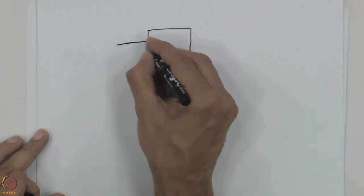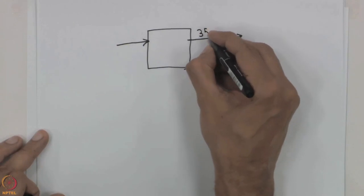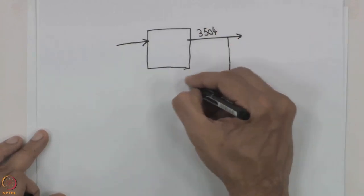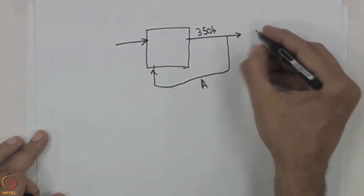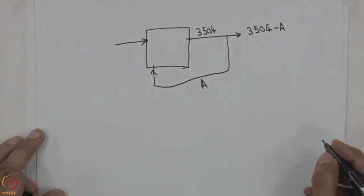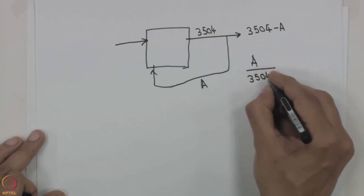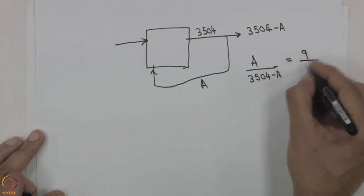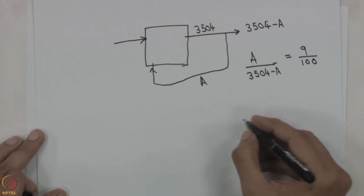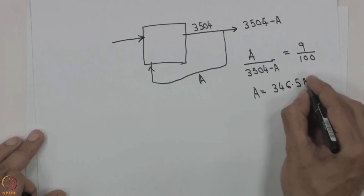This was the gross generation. Now considering auxiliary consumption: the gross generation is 3504 MUs, out of which we have auxiliary consumption A being used internally, and the net output is 3504 minus A. We are told 9 percent is the auxiliary consumption, meaning A divided by the net output (3504 minus A) equals 9 divided by 100. Solving this, A turns out to be 346.5 MUs.